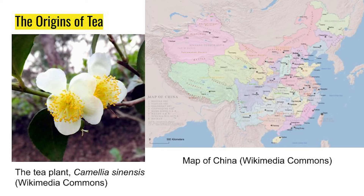Let's begin by considering its origins. The tea plant — Camellia sinensis — has been cultivated and consumed in East Asia for over a thousand years before it becomes this global commodity in the 17th century. The Chinese were the first to consume tea as a beverage, and even before that they were using it as a medicine. Tea, as a beverage, really only involves the top couple of leaves, the top couple of shoots of the tea plant.